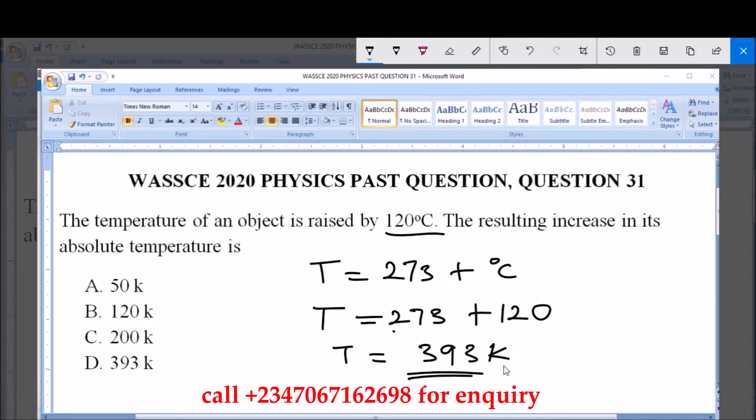This is the absolute temperature for the increase by 120 degrees Celsius. It is given in Kelvin, and that is 393 Kelvin, which is option D.